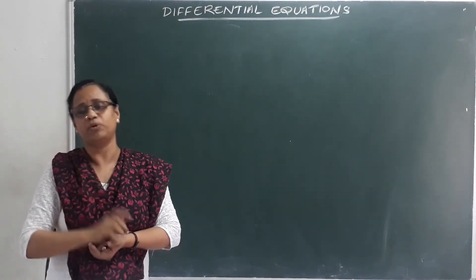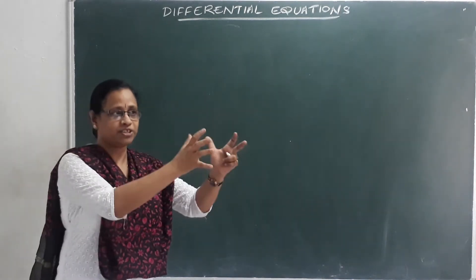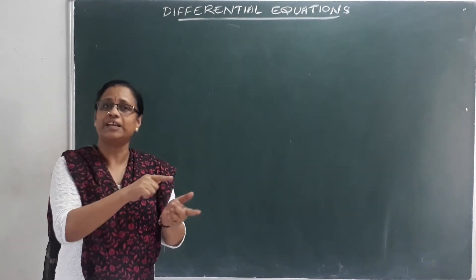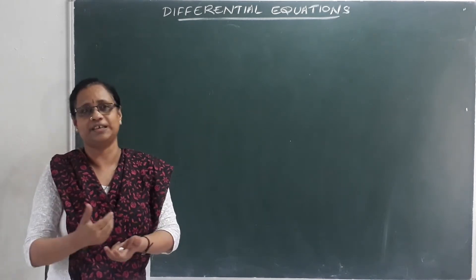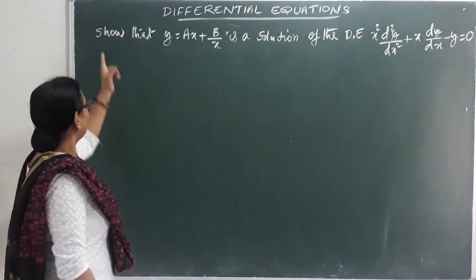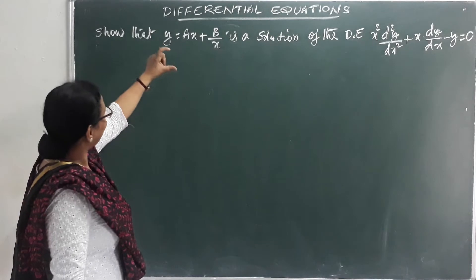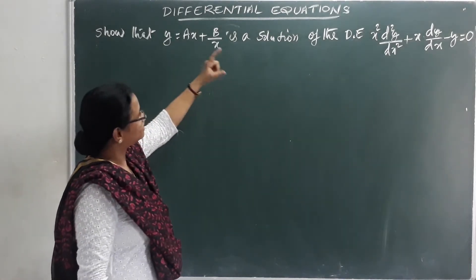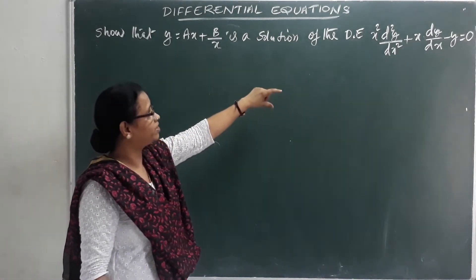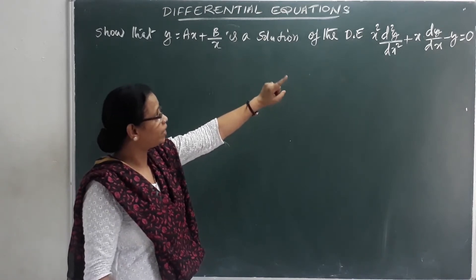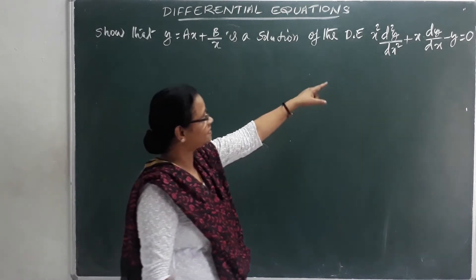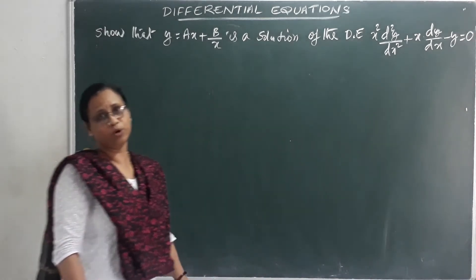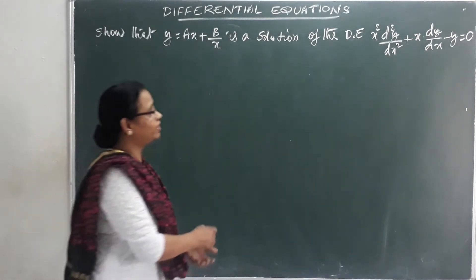What I want to talk about is the differential equation and its solution. We need to check this solution. Show that y = ax + b/x is a solution of the differential equation: x² (d²y/dx²) + x(dy/dx) − y = 0.